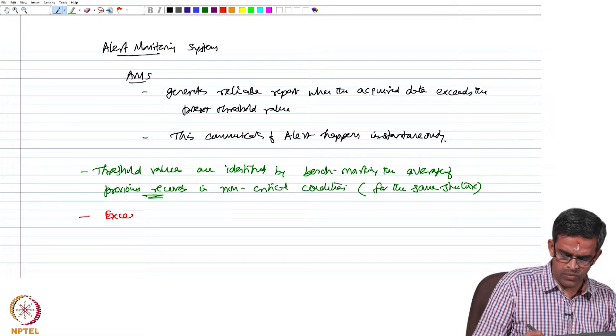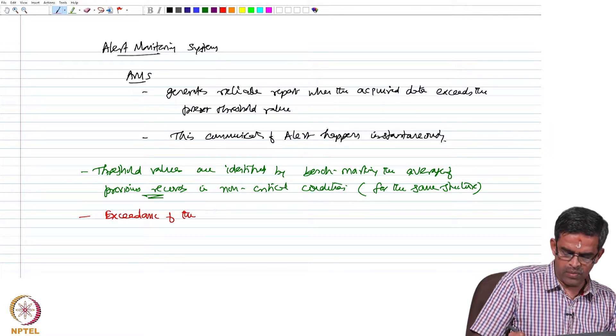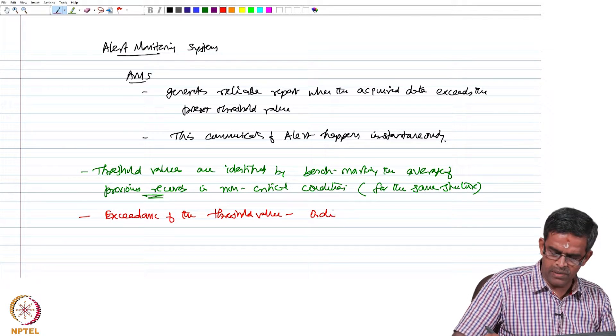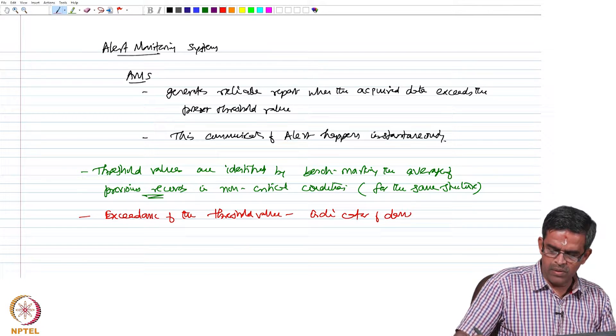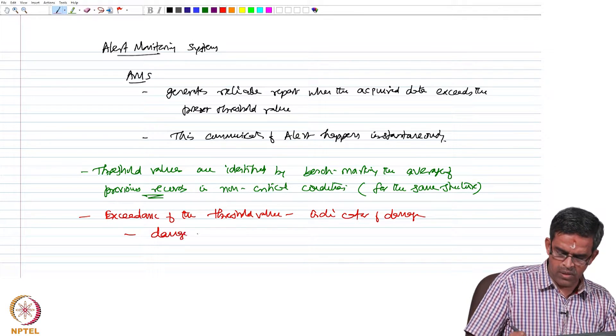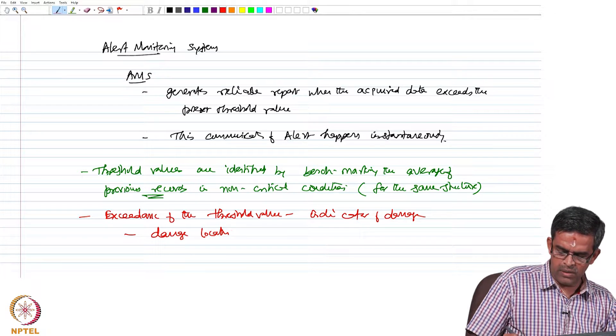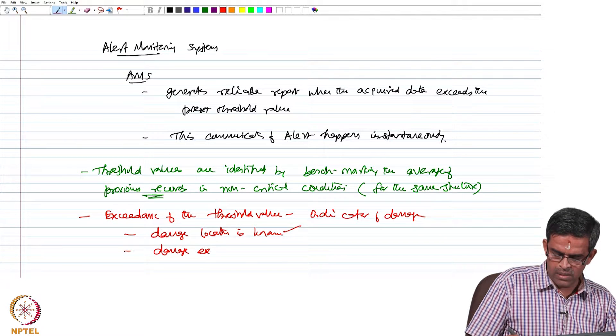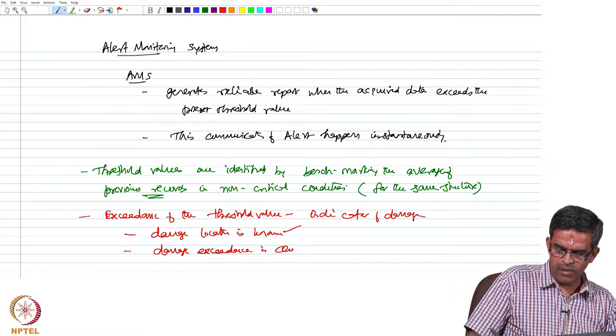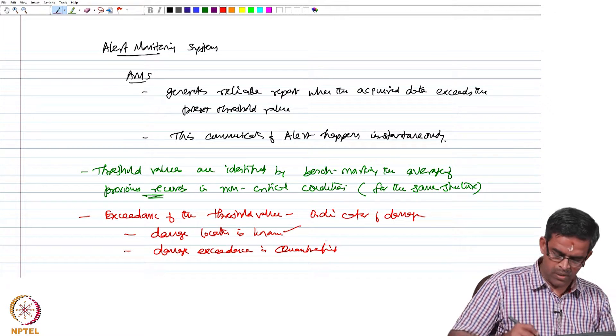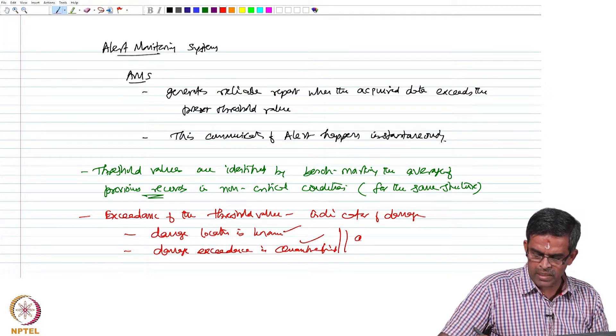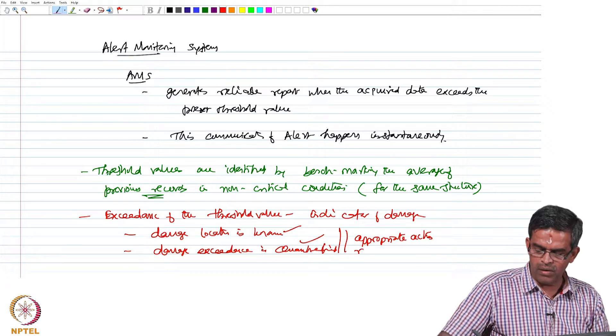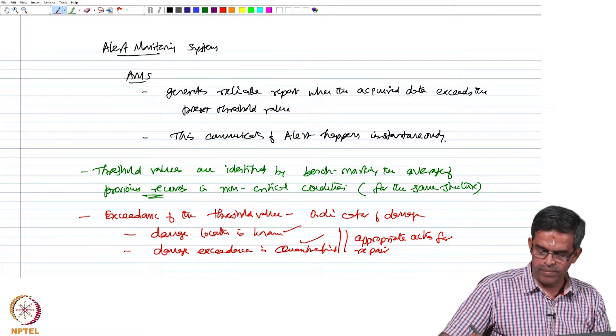Exceedance of threshold value is an indicator of damage. The damage location is known because the sensor location is known. Damage exceedance is quantified because it exceeded the threshold value. Therefore, one can take appropriate action for repairing or reconstructing the structure.